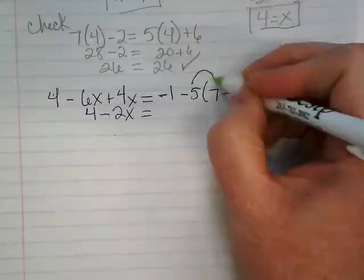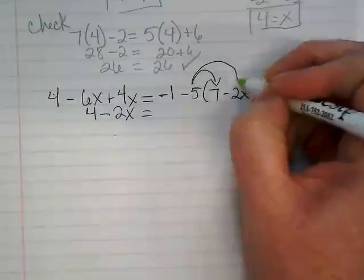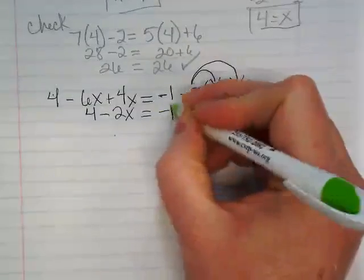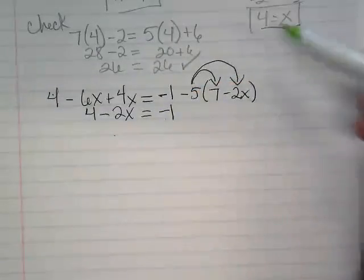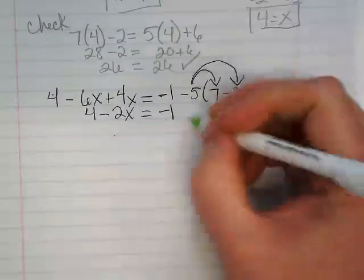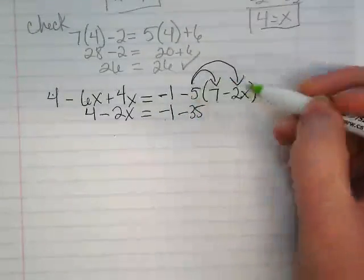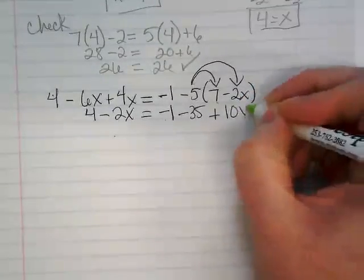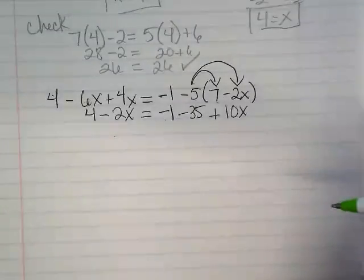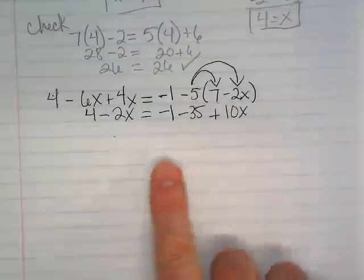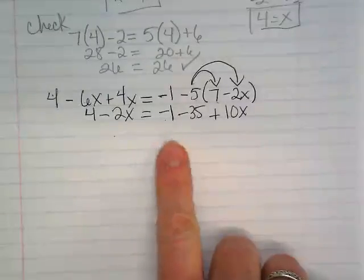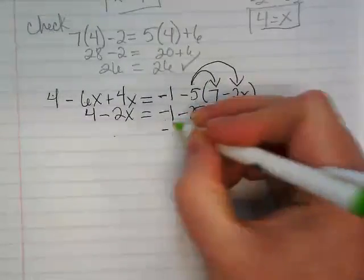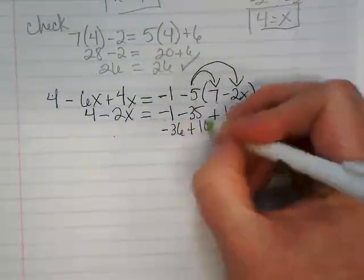On the right side, I have to distribute this, but I'm not going to do anything with this negative 1 yet. So I'm going to just move it down here, and then I'm going to distribute negative 5 times 7, which would be negative 35. Negative 5 times negative 2x is positive 10x. I still have like terms to put together over here. Negative 1 and negative 35 is going to be negative 36 plus 10x.